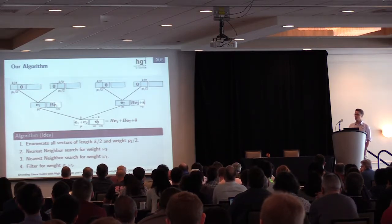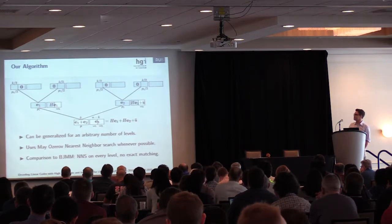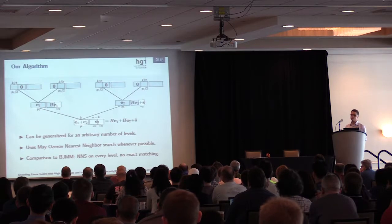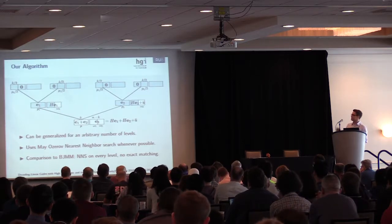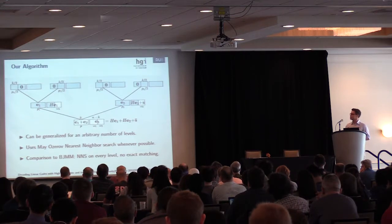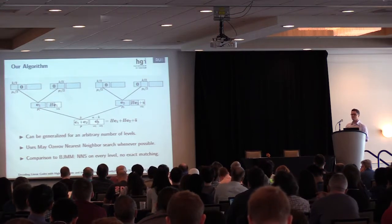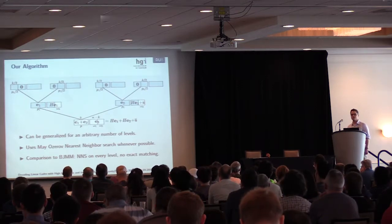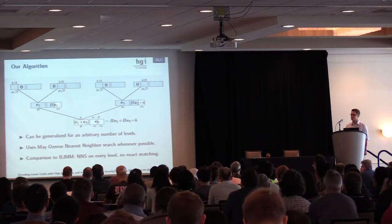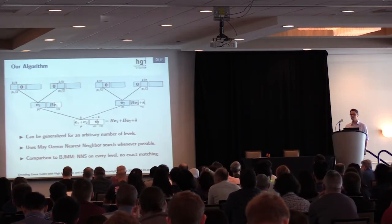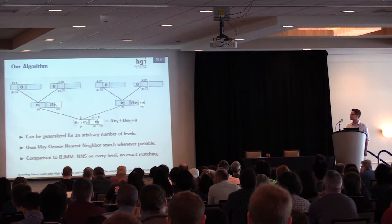That's our idea for our algorithm. Of course, this can be generalized for more layers. We can simply choose more lists and do this again in one step above. And we use the nearest neighbor search whenever possible. The nearest neighbor search from May and Meurer has some restrictions which have to be satisfied, and if it's not satisfied, we have to choose some other nearest neighbor search.